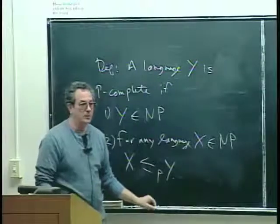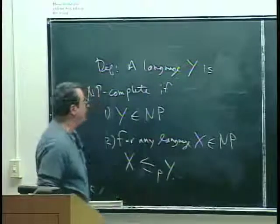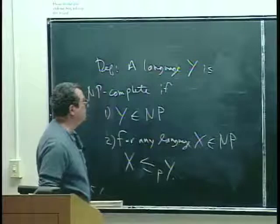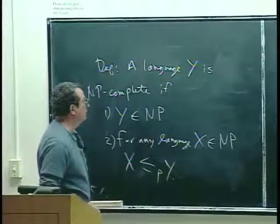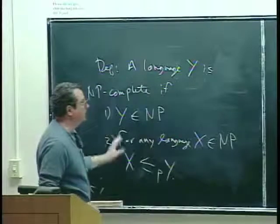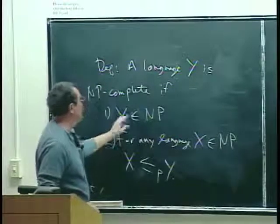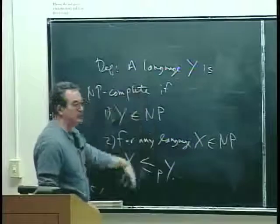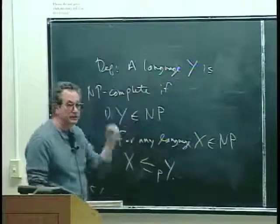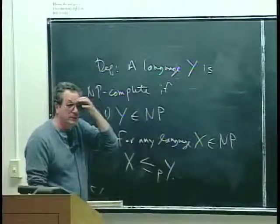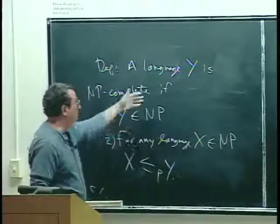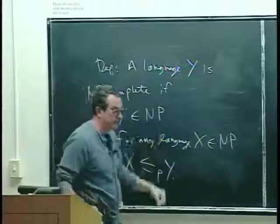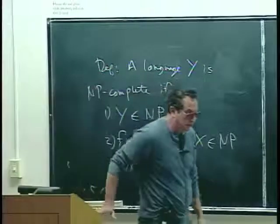So a language is NP-complete if first of all it's in NP, but also any other language that happens to be in NP can be reduced in polynomial time to Y. I'll end with that definition, and next time we'll exploit this to get some immediate theorems that tell you why NP and NP-completeness are important.